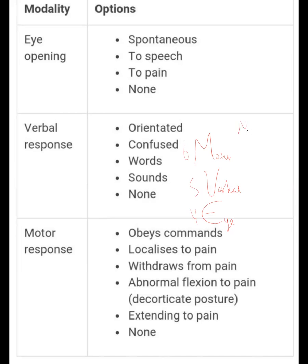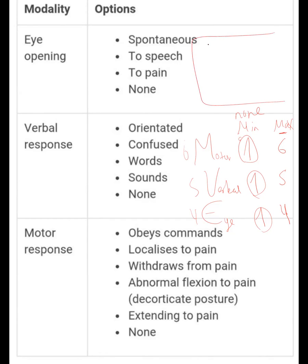The minimum score in motor is one — anyone with none will take a minimum score of one. The maximum is six in motor, five in verbal, and four in eye. Three important things to know: the minimum total GCS is three, the maximum is fifteen, and once the patient is at eight or less, you have to intubate — eight, intubate.